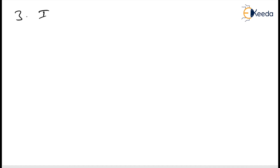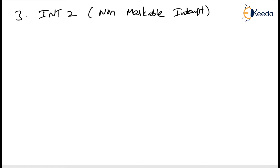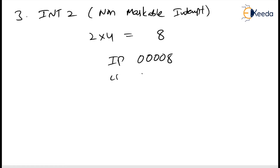Next is INT2, which is the non-maskable interrupt. Whenever the NMI pin is activated, the microprocessor automatically generates a type 2 interrupt and executes the corresponding ISR. The ISR address is obtained from type 2 multiplied by 4 equals 8, so the IP is loaded from 00008H and CS from 0000AH in the interrupt vector table.